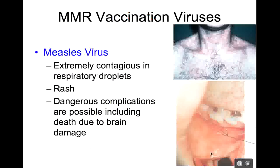A common vaccine we get is called the MMR, which stands for measles, mumps, and rubella. I'm going to talk about the three viruses involved with that vaccine. First is the measles virus. The measles virus is extremely contagious in respiratory droplets. It usually causes a rash — generally a mild childhood infection — but you can wind up with serious complications. Here you can see a picture of the measles rash; it looks like a speckled rash, sort of reminiscent of Rocky Mountain Spotted Fever.